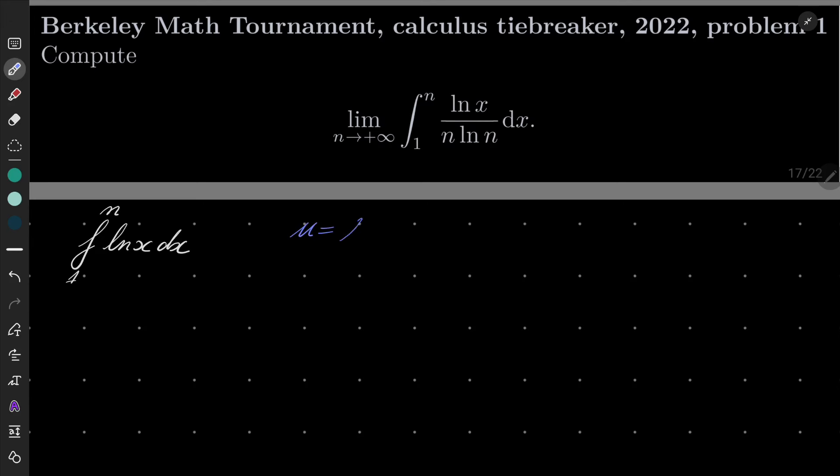My u part will be natural log of x. Its derivative is just 1 over x. And since natural log is multiplied by 1, my v function is just x. Now to find my integral I have to multiply these numbers: natural log of x times x